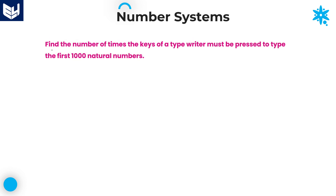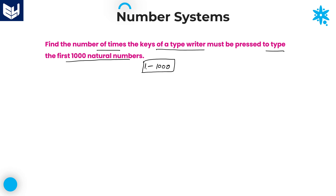Let's move on to the next question. Find the number of times the keys of a typewriter must be pressed to type the first 1000 natural numbers — that is, from 1 to 1000.